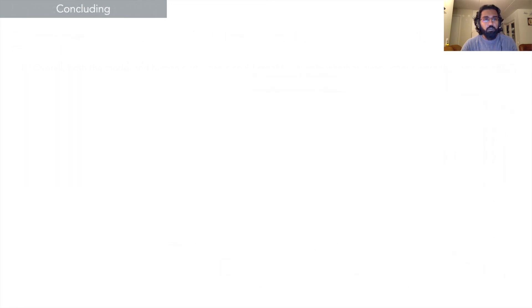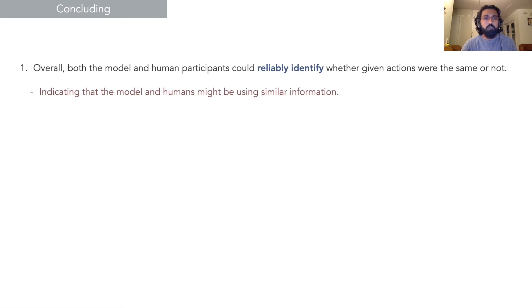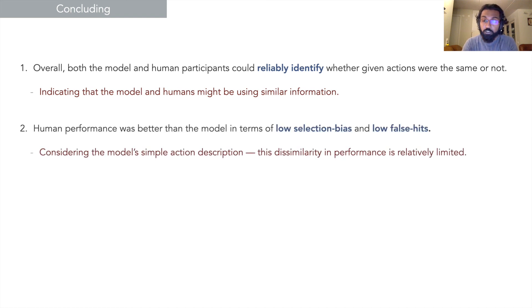In concluding, the results indicate that both the humans and the model reliably identify the actions, which indicates that the model and the humans might be using similar information. The human performance was better than the model in terms of selection bias and false hits.